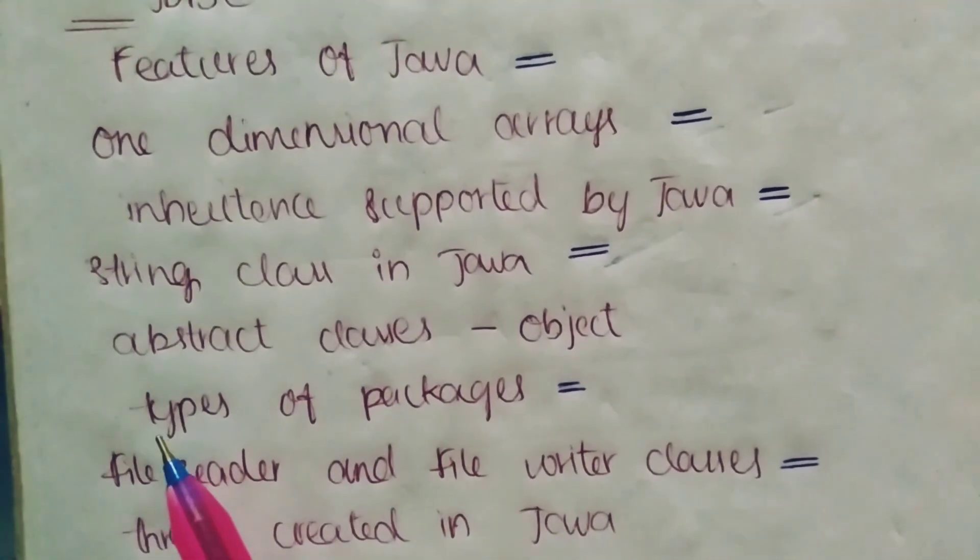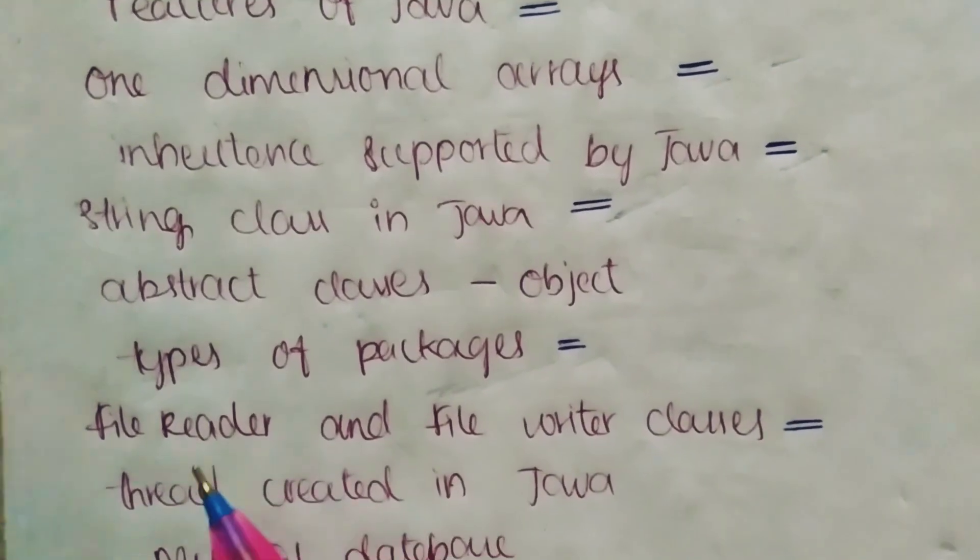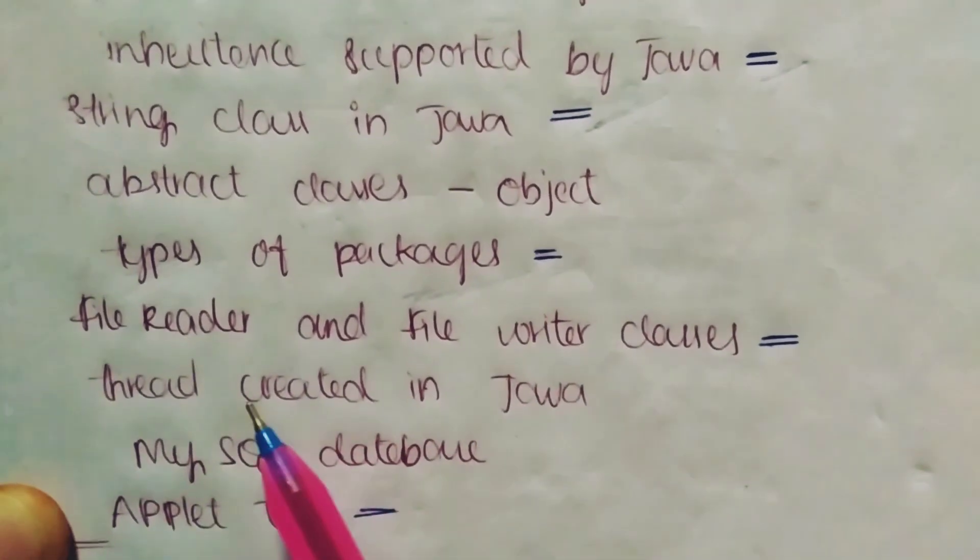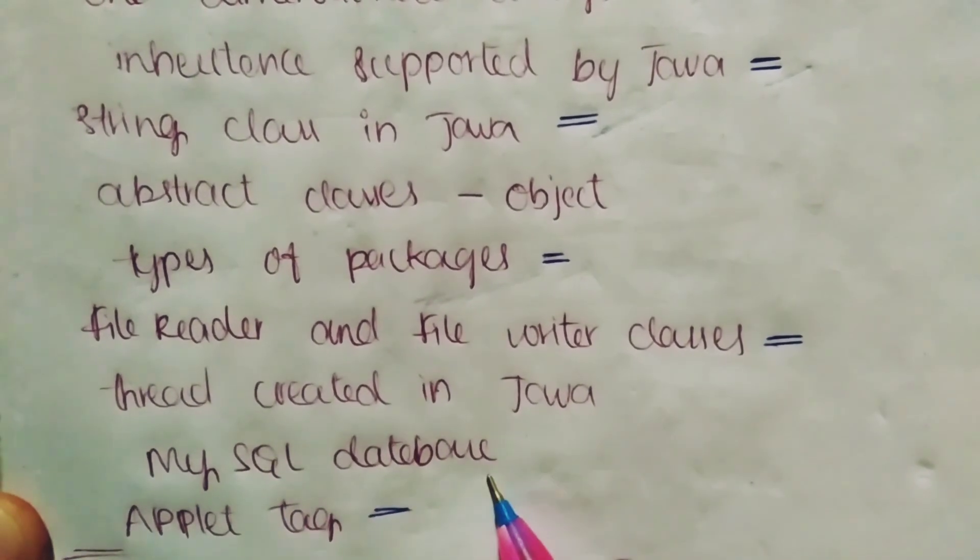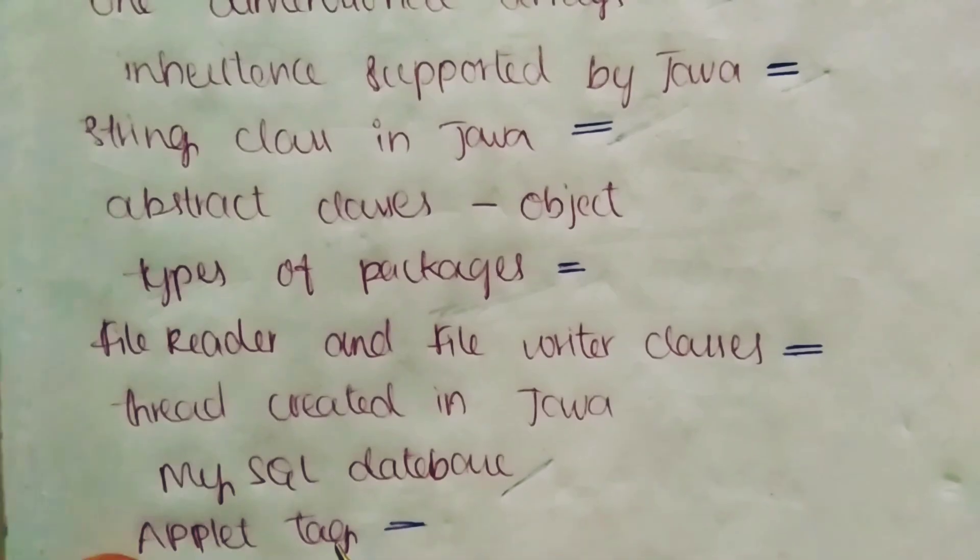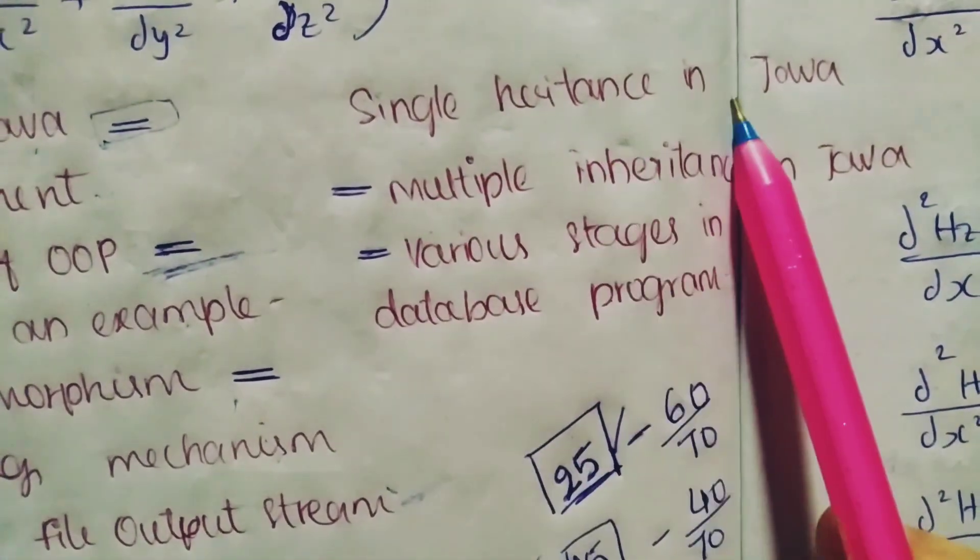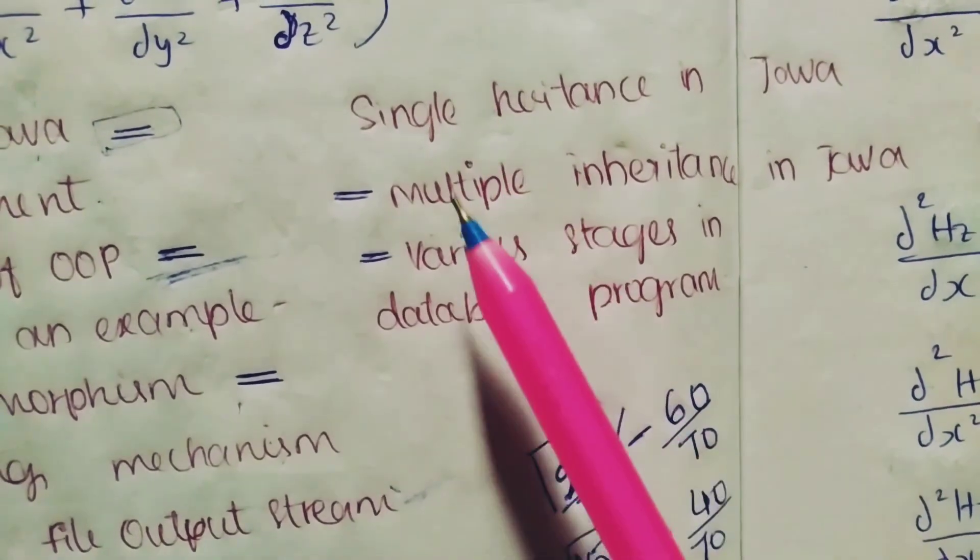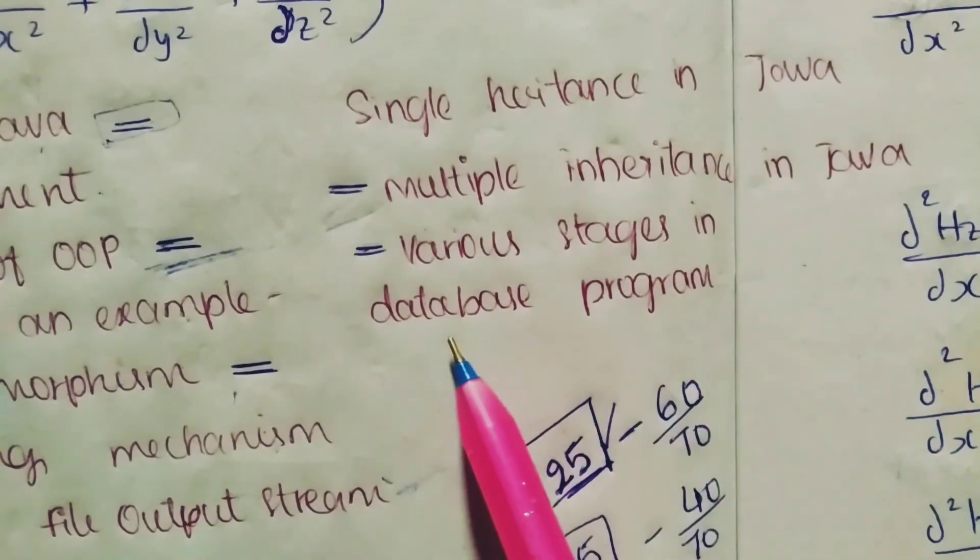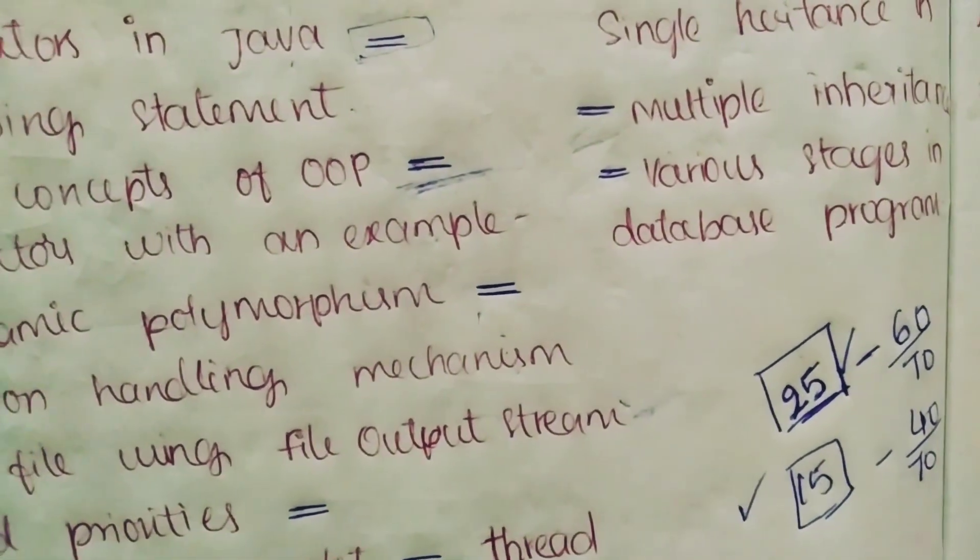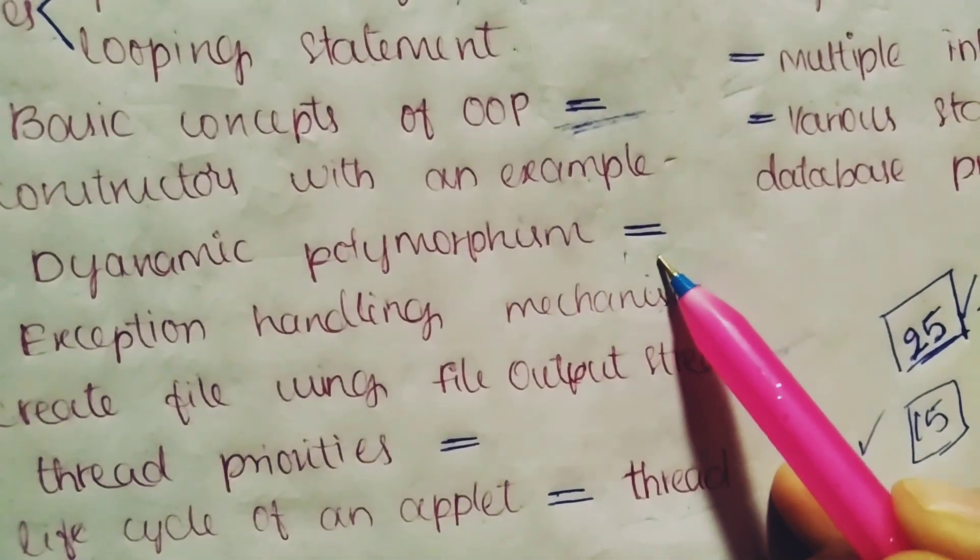Abstract classes and object classes - both are important questions here. And very very important question, types of packages. Packages and its types is very very important. File reader and file writer classes, very very important. Thread created in Java, important question. MySQL database, important question. Applet tag, very very important. And single inheritance in Java, important question. Multiple inheritance in Java, very very important. Various stages in database program, very very important.